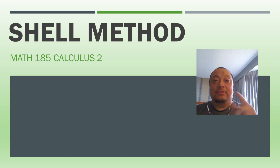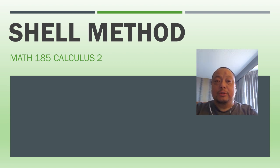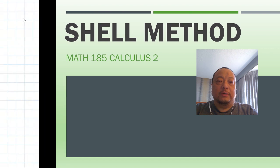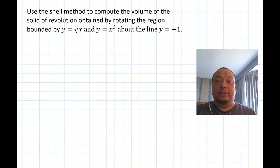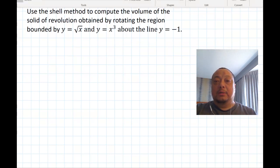Welcome back. In this video, I'll solve this shell method example without the help of any computer graphing and show the steps in solving a shell method question. The problem is: use the shell method to compute the volume of the solid of revolution obtained by rotating the region bounded by y equals square root of x and y equals x cubed about the line y equals negative one.